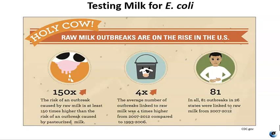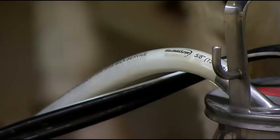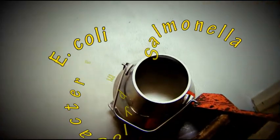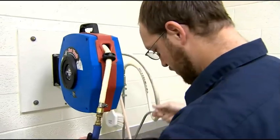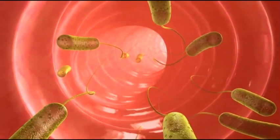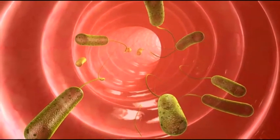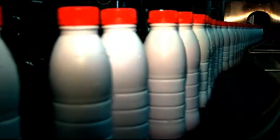Unpasteurized or raw milk from cows, sheep, goats, or other animals can carry bacteria that can make you sick, like Salmonella, E. coli, Campylobacter, and Listeria. Pasteurization heats milk to a high temperature for a short period of time, which kills disease-causing bacteria. These harmful bacteria usually don't change the look, taste, or smell of milk, and you can only be sure they're not in your milk if it has been pasteurized.